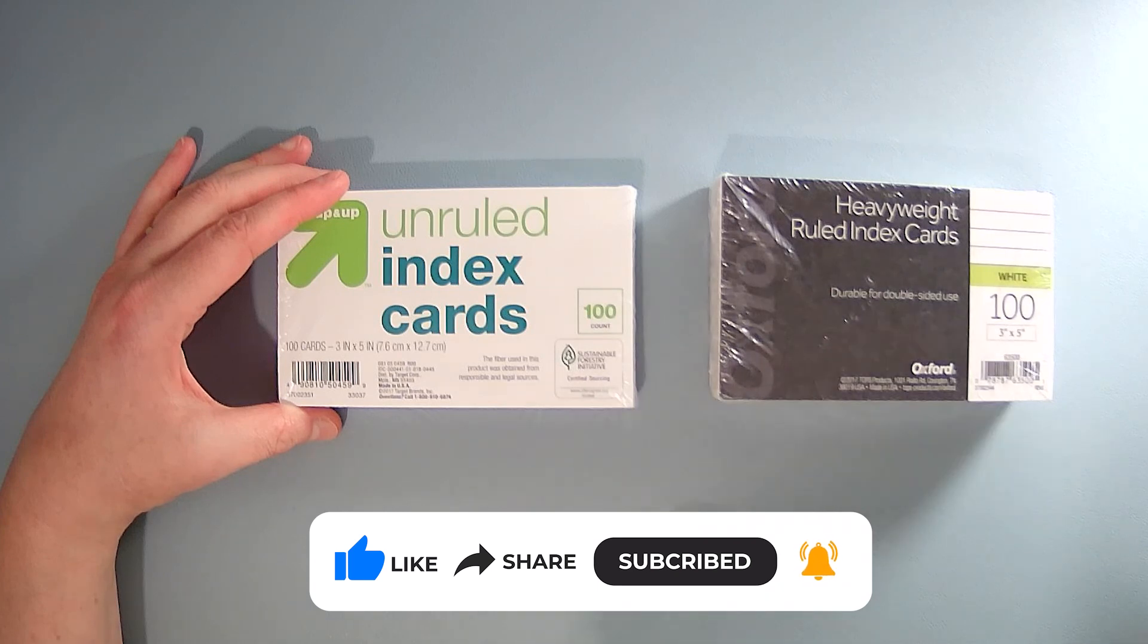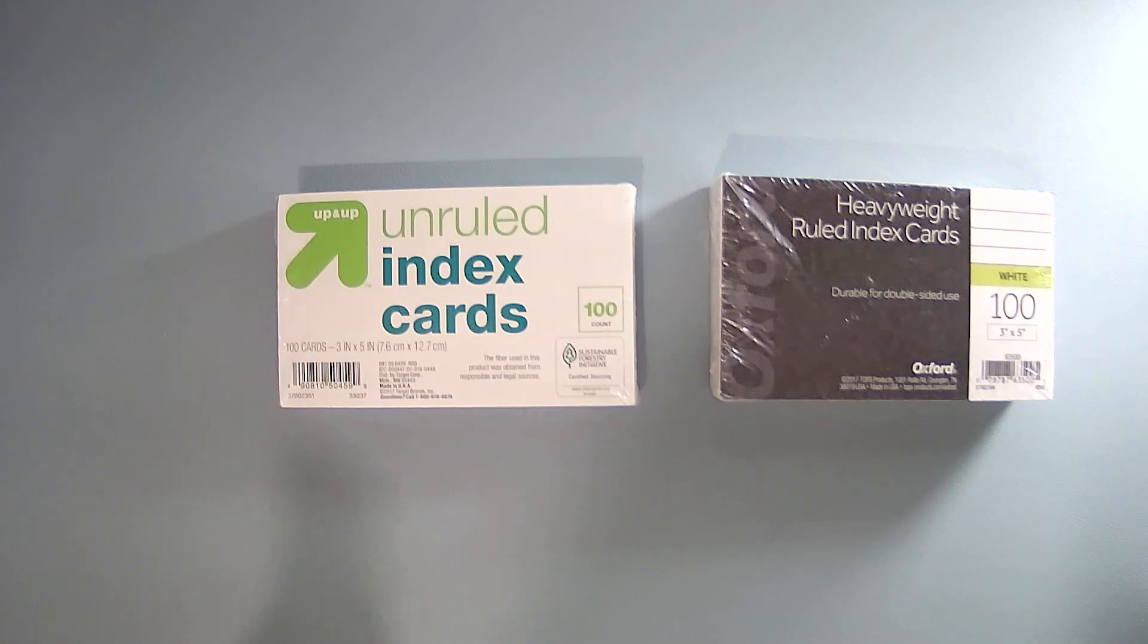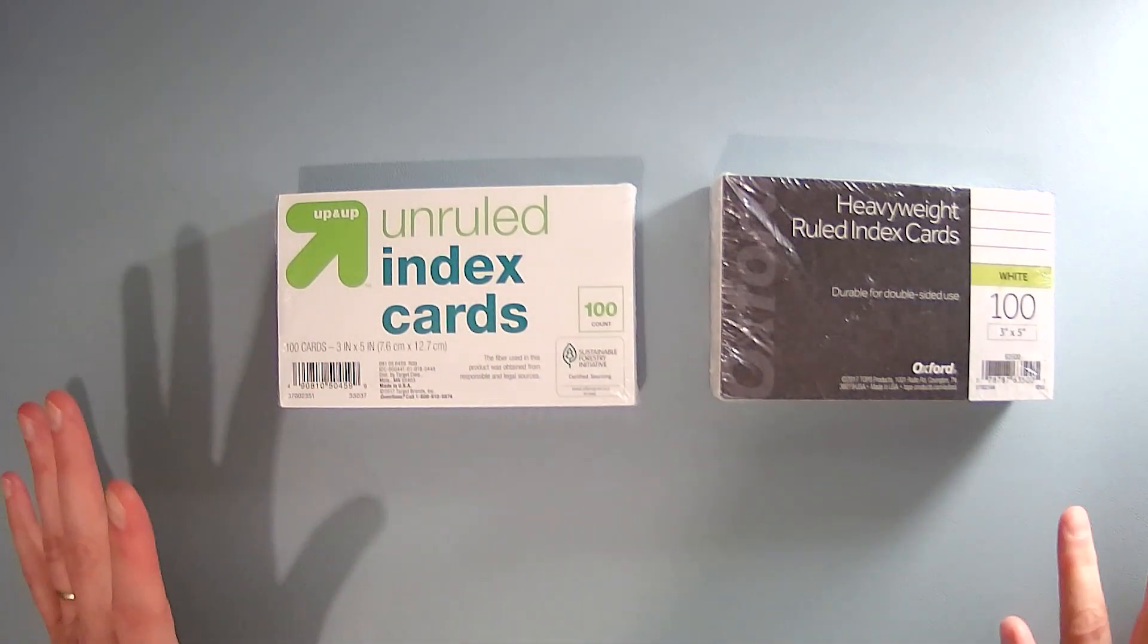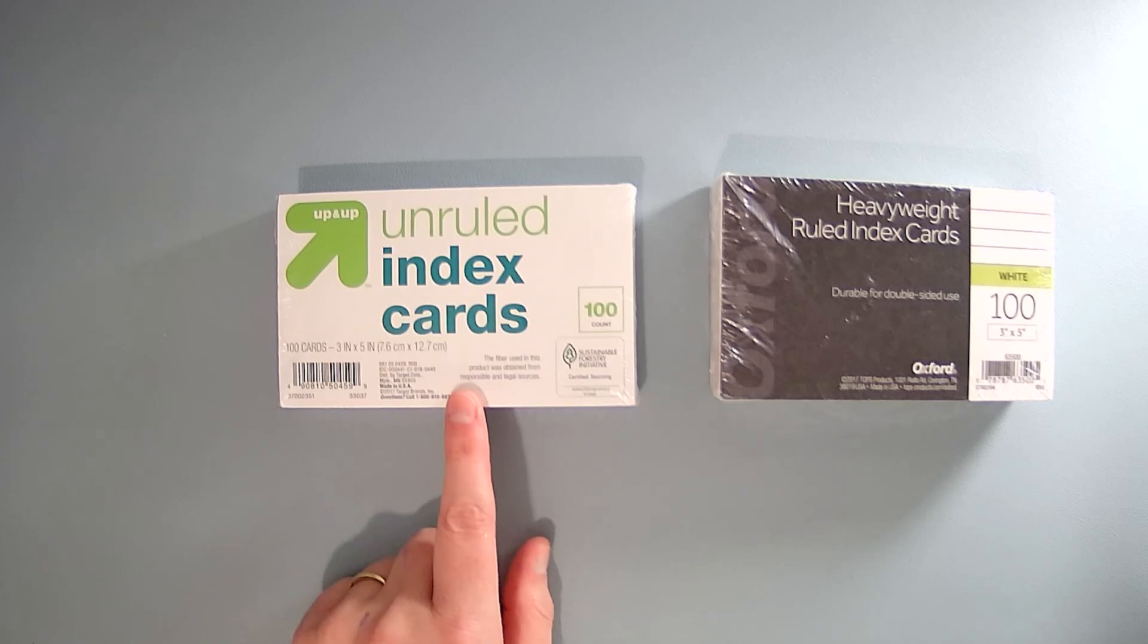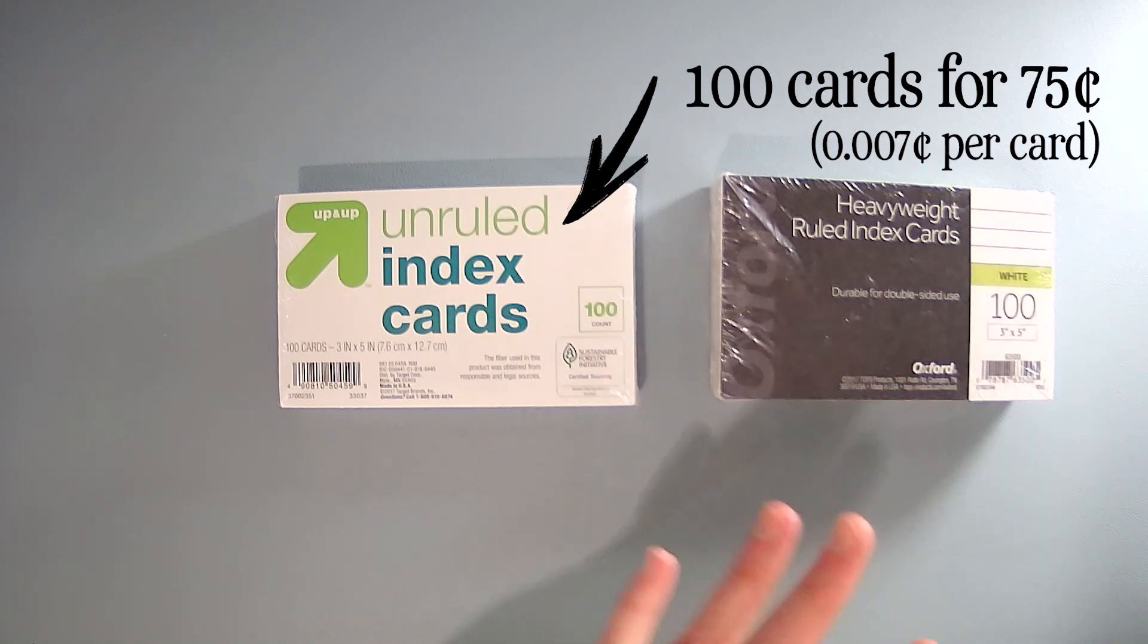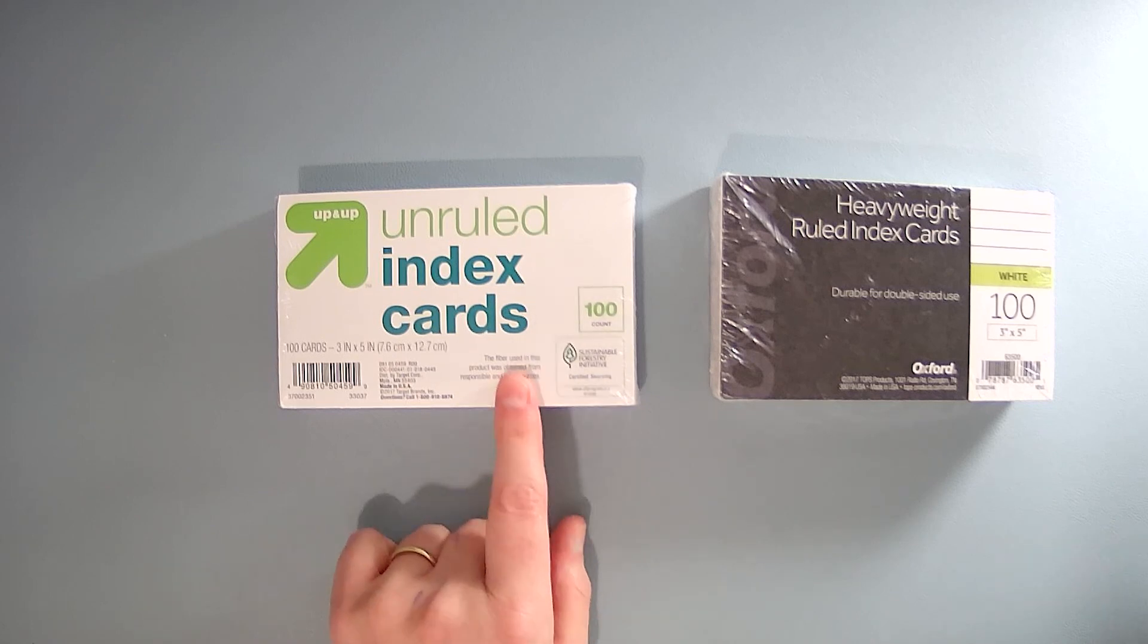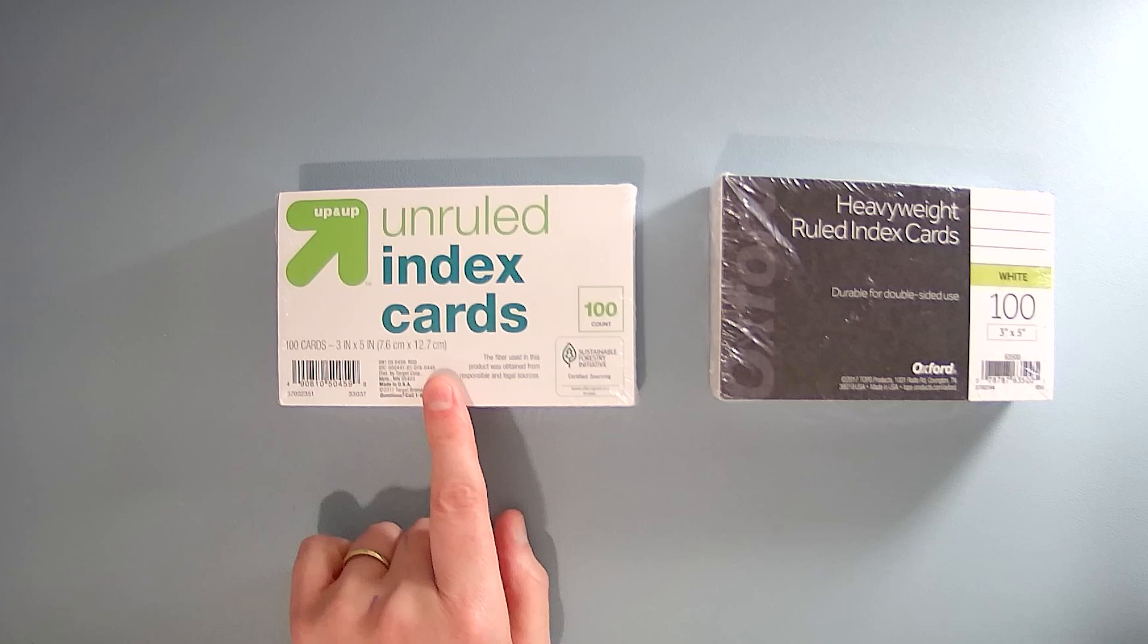Again, you can buy index cards in any size. This is just what works for me and I like to stay with the same size for everything. So first of all, let's talk about price. The Target up and up blank cards that I purchase, I spend about 75 cents for every hundred. Sometimes around back to school time in August, sometimes even July or September, you can get these on sale for 50 cents a package. But generally speaking, year round, they're 75 cents.